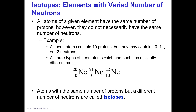We mentioned the word isotope earlier, so I'm going to define that. Atoms of the same element can have different numbers of neutrons — that's how it is in nature. You could come across isotopes of the same element that have different numbers of neutrons; therefore they have different mass numbers.